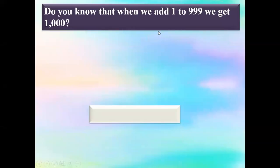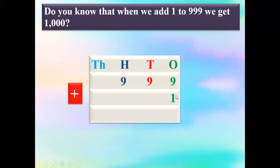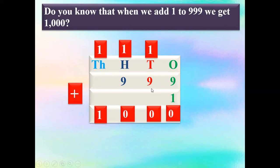So do you know that when we add one to nine hundred and ninety-nine, we'll get one thousand? Let us find out. We'll write nine hundred and ninety-nine and add one. Nine plus one is ten — write zero and one as carryover. Again nine plus one is ten — write zero and one as carryover. Again nine plus one is ten — write zero. Now no number is there in the thousands place, so we'll write one over here. So the answer is one thousand.